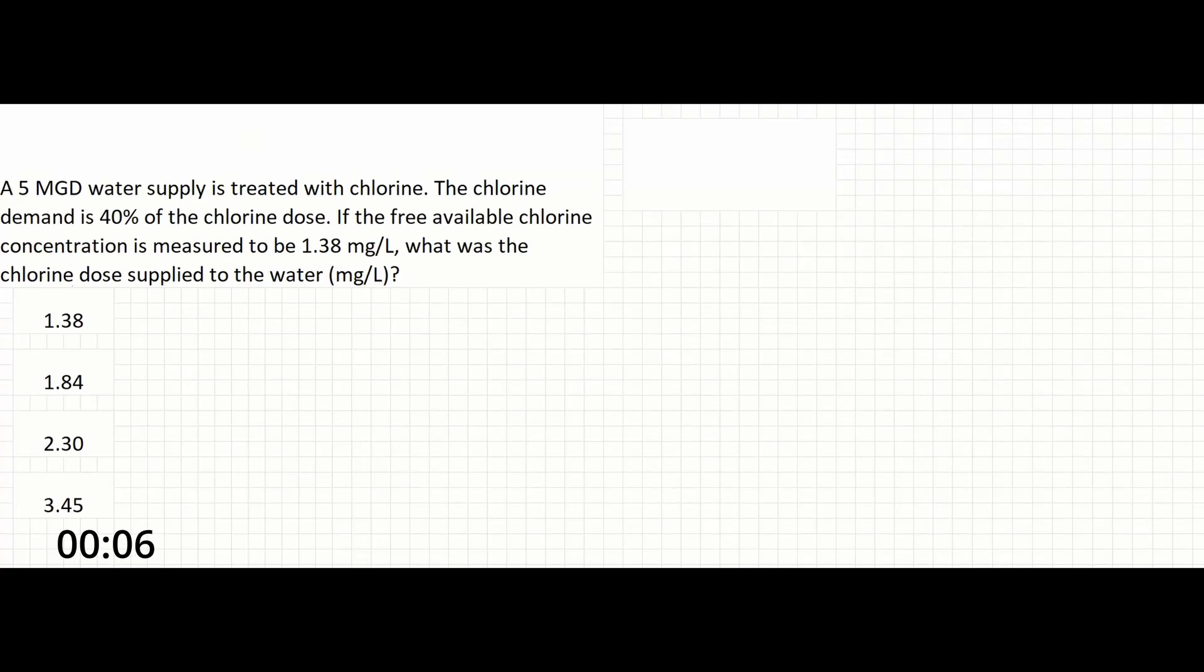In this problem, a 5-MGD water supply is treated with chlorine. The chlorine demand is 40% of the chlorine dose. If the free available chlorine concentration is measured to be 1.38 milligrams per liter, what was the chlorine dose supplied to the water in milligrams per liter?